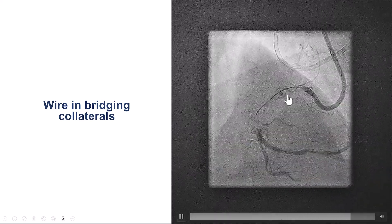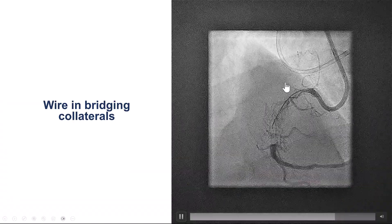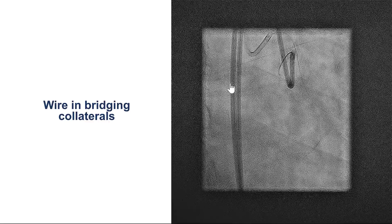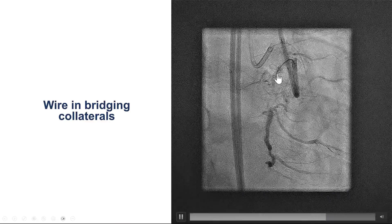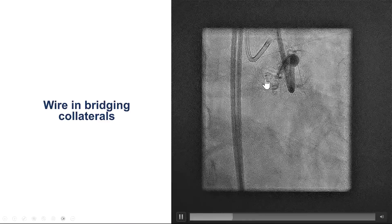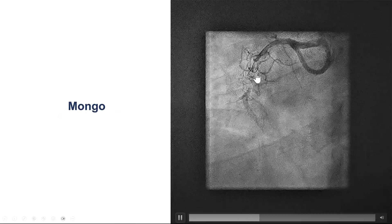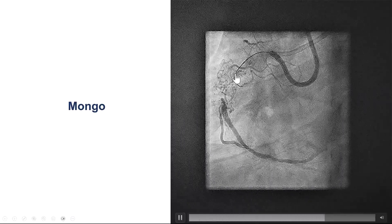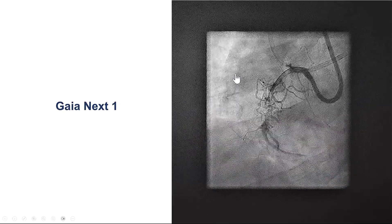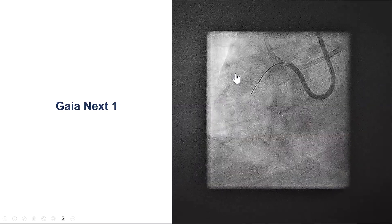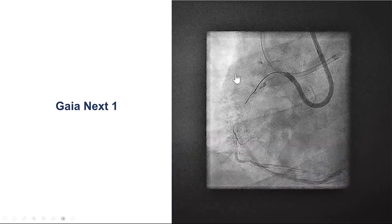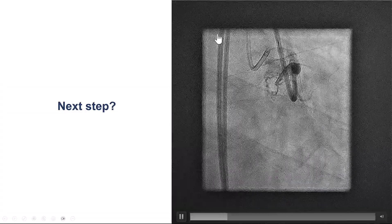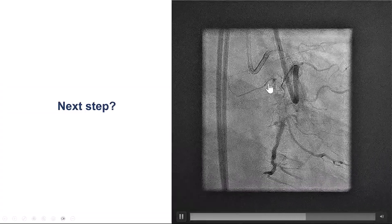As predicted, the antegrade guide wires — polymer-jacketed wires including the Fielder XTA and Gladius Mongo — kept entering the bridges. The same thing can be appreciated in the RAO view. We were unable to advance the guide wire into the cap; it kept entering those bridges and collaterals. We thought a stiffer wire might help stay within the intraplaque segment, but unfortunately the same thing happened. This is a Gaia Next 1, and still it seems to be going into those collaterals.